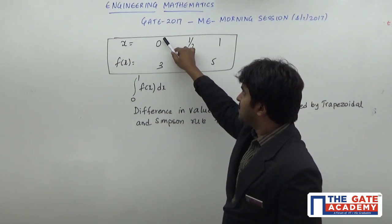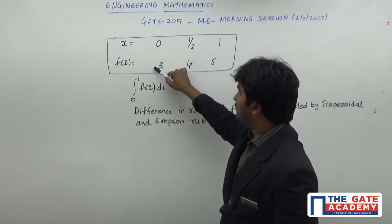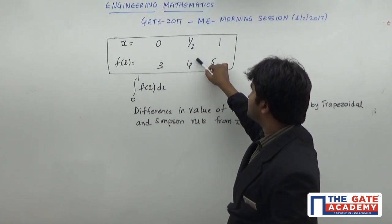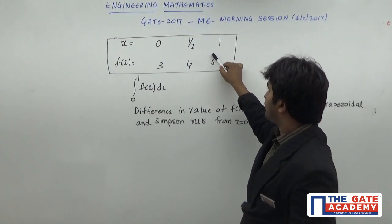Now here if you are observing, at x equals 0, the value of f(x) is 3. x equals 1, the value of f(x) is 4. x equals 2, the value of f(x) is 5.